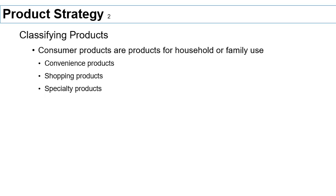Typical specialty products include things like designer clothing. Clothing in general might be a shopping product, but if you are very brand-conscious and looking for a particular brand or model from a specific manufacturer, then we consider that a specialty product — because you are not willing to just buy a different one. These are things you go out of your way to find.